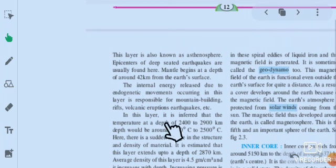In this layer, it is the effect that the temperature at the depth of 2400 to 2900 kilometers depth would be around 2200 degrees Celsius to 2500 degrees Celsius is the temperature of this layer. Here there is a sudden change in the structure and density of material. It is estimated that this layer extends up to the depth of 2870 kilometers.